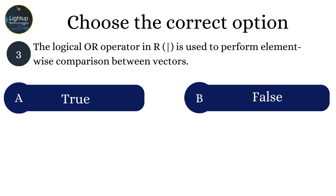The logical OR operator in R, represented by the vertical bar, is used to perform elementwise comparison between vectors.